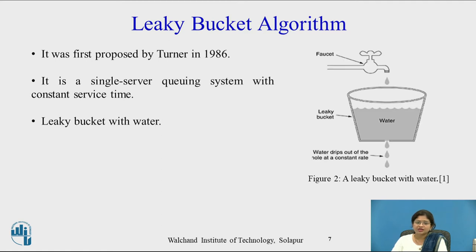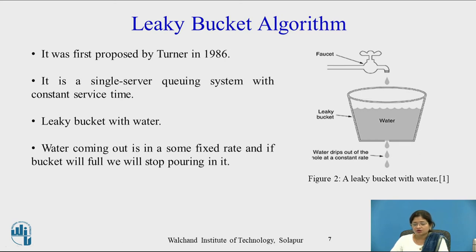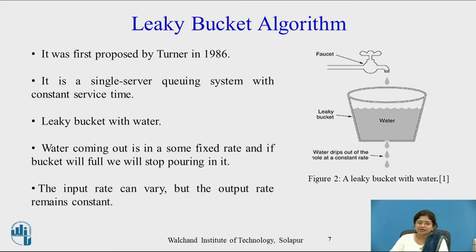Look at this diagram. The leaky bucket is shown with water. The water coming out is at a fixed rate, and if the bucket is full, we stop pouring into it. In this bucket, water is thrown in with an unregulated flow, but from the leaky bucket, water drips out through a hole at a constant rate. Once the bucket is full, we stop pouring water — if we still pour, the water spills out and is wasted. So the input rate can vary but the output rate remains constant.